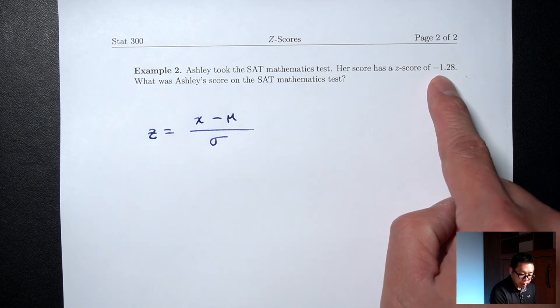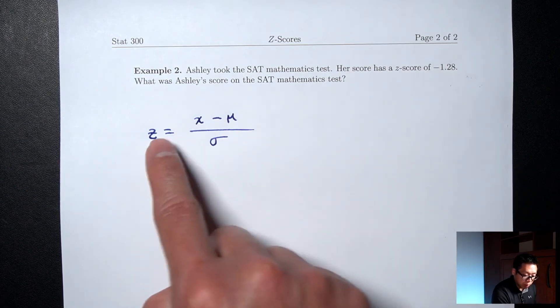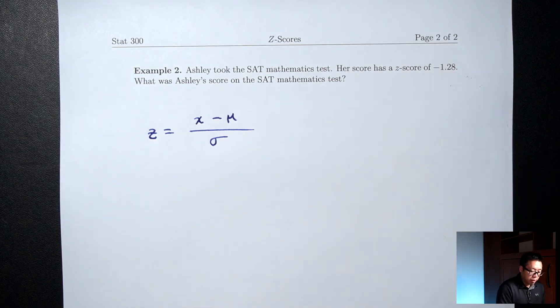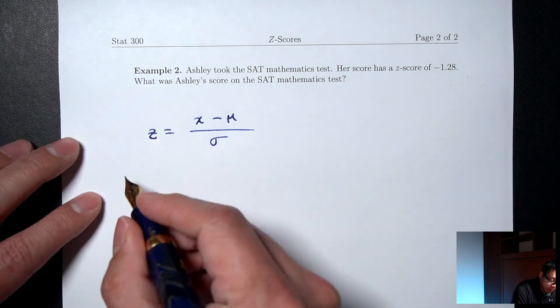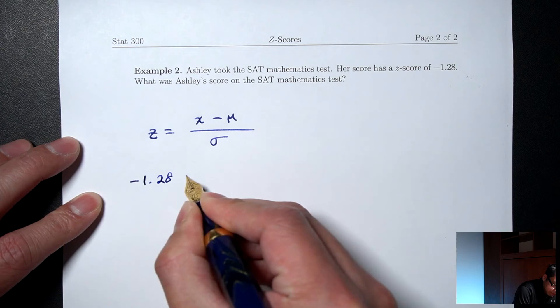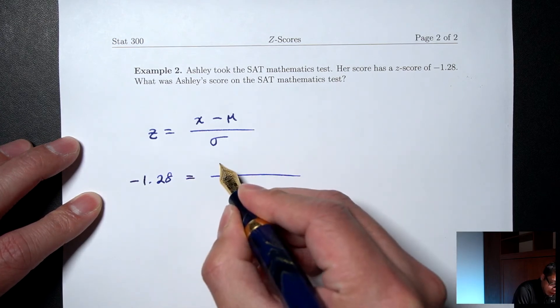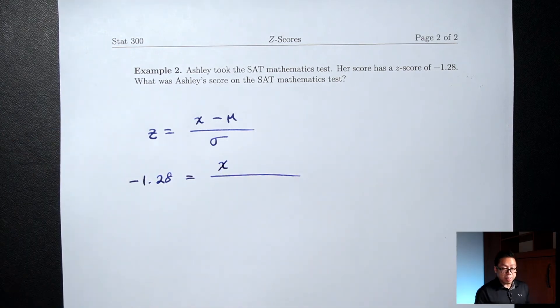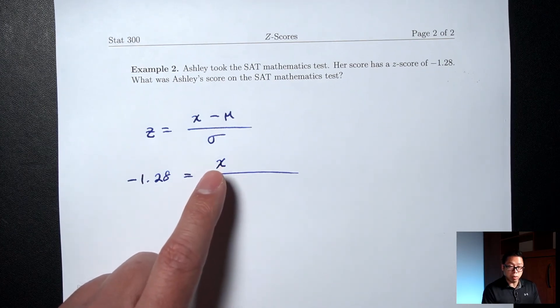So this negative 1.28 doesn't go in for x, it goes in for the z because it's a z-score. So we should put negative 1.28 in for the z. x is the SAT math score, that's what we're looking for, so I'll leave it as x minus the mean.